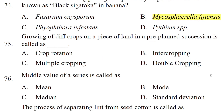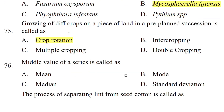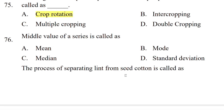Growing different crops on a piece of land in a planned succession is called — crop rotation, intercropping, multiple cropping, or double cropping? The correct answer is crop rotation. The middle value of a series is called — mean, median, mode, or standard deviation? The correct answer is median.